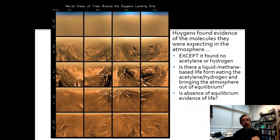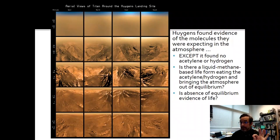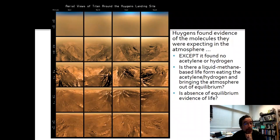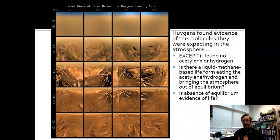So the Huygens probe dove through the atmosphere, and as it dove it saw things like this as it went down — you can see what its camera saw. If I told you these images were false orange color of Earth, you would believe me. It looks like Earth geologically. Chemically, these are very different chemicals, but it's evidence that we really do have weather patterns going on. As it went through the atmosphere, it sampled the atmosphere and found everything that it was expecting from the equilibrium geological calculations, except it didn't find acetylene and didn't find hydrogen. Hypothesis: could there be liquid methane-based life that is eating the acetylene or hydrogen, getting electrons from it? Life needs to move electrons around to form bonds — maybe it's pulling electrons from these abundant and easy-to-oxidize things. Taking the electrons off means oxidizing them.